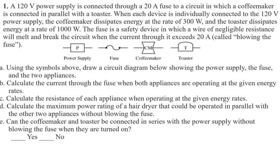A 120-volt power supply is connected through a 20-amp fuse to a circuit in which a coffee maker is connected in parallel with a toaster. When each device is individually connected to the 120-volt power supply, the coffee maker dissipates energy at 300 watts and the toaster at 1000 watts. The fuse is a safety device where a wire of negligible resistance will melt and break the circuit when the current exceeds 20 amps — called blowing the fuse.